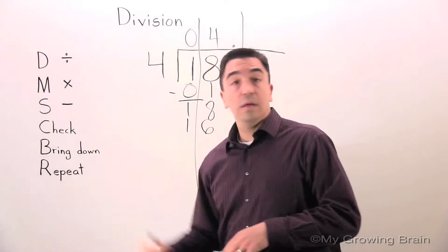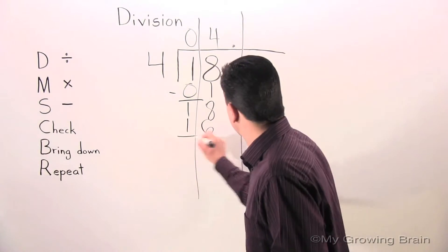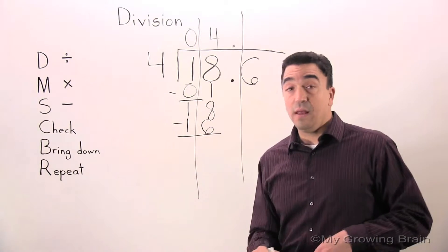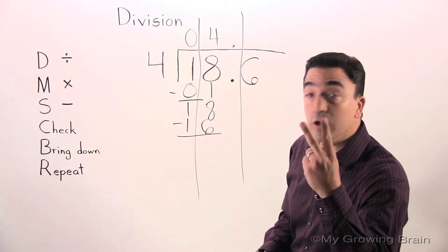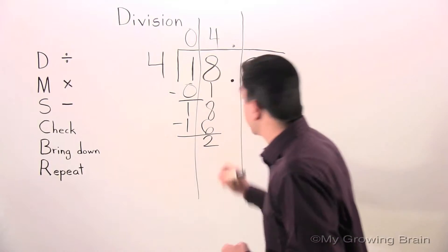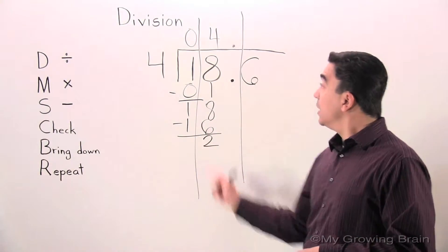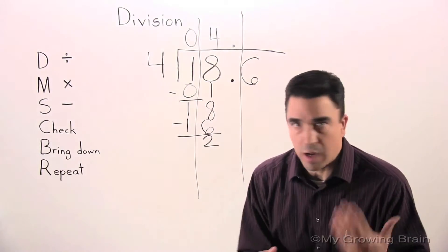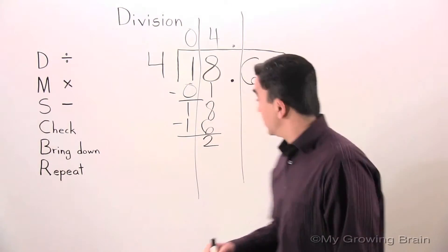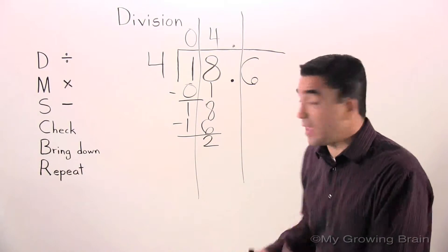Next step: subtract. 18 minus 16 is 2. Next step: check. 2 is less than 4. Keep on going. Bring down. Bring down the 6.